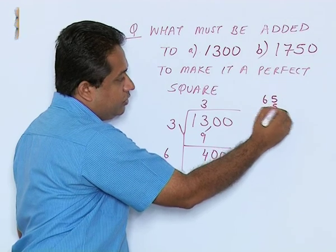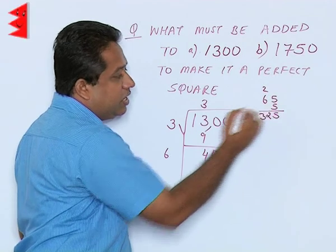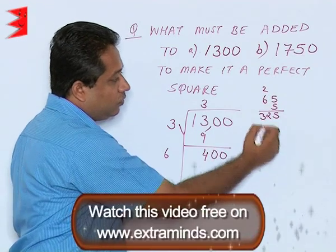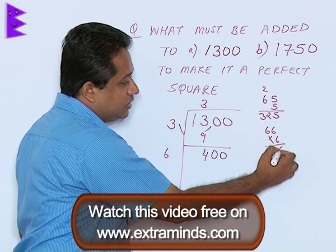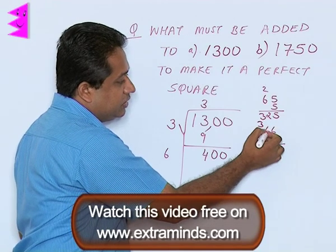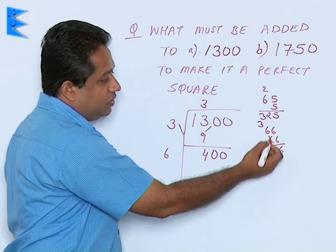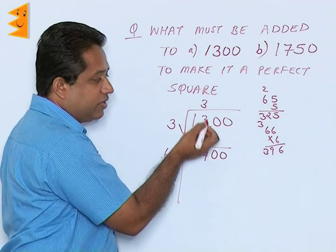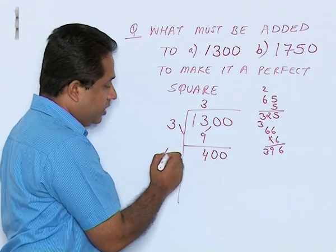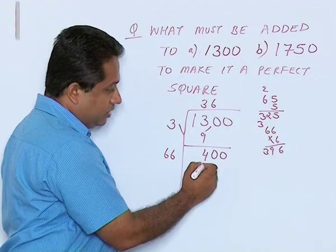65 into 5 is 325. If I take 6, 66 into 6 is 396. Now here 66 into 6 is 396. If I take 67 into 7, that becomes more than this, so we are going to take 6. So 66 into 6, we are going to get 396. The remainder here is 4.